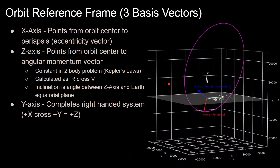The z-axis is defined as pointing from the orbit focus toward the direction of the angular momentum of the orbit. In the two-body problem with no orbital perturbations, this vector and its magnitude are constant in inertial space. This actually refers to the specific angular momentum, since mass is not included — unlike the angular momentum of a spacecraft where mass matters — and is calculated by taking the cross product of the position and velocity vectors at any point in the orbit. The y-axis then completes the right-handed system, such that positive x cross positive y equals positive z.